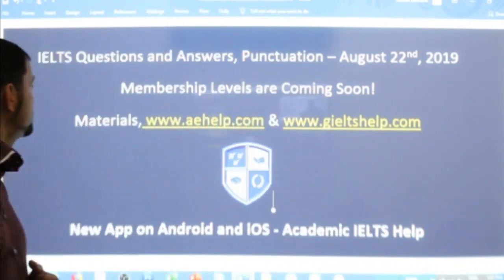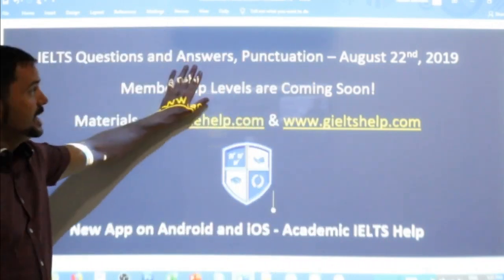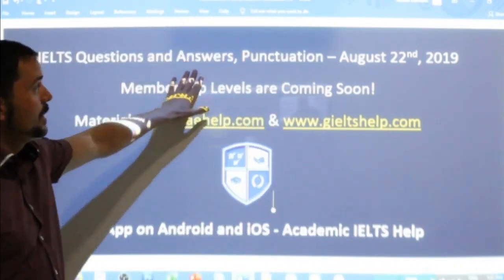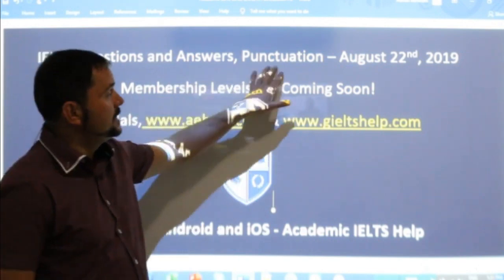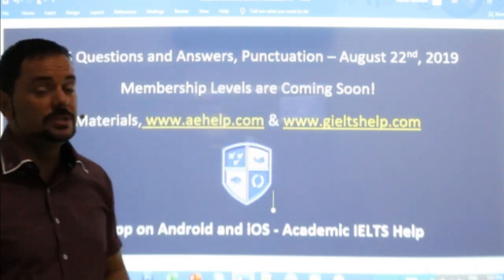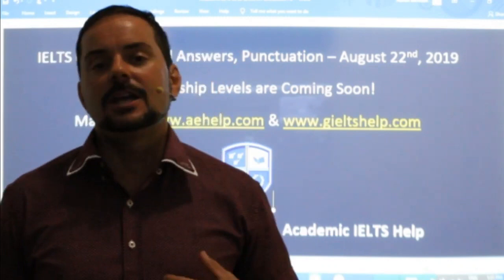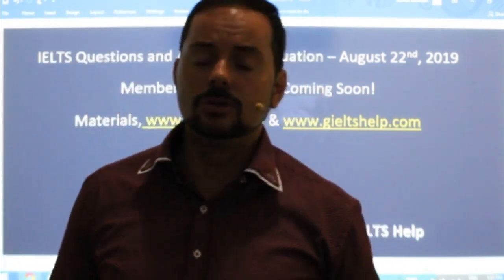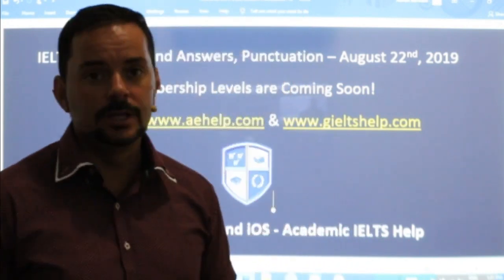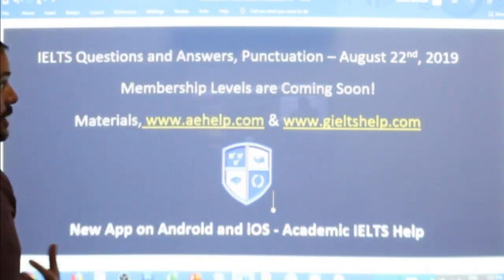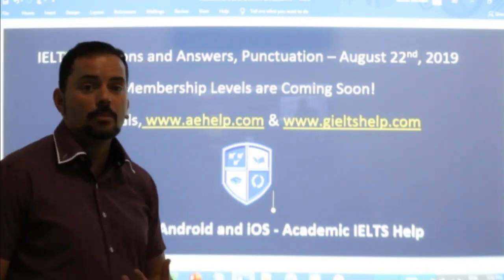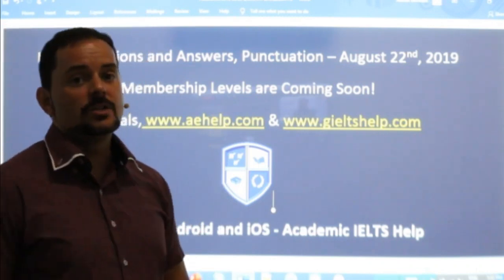In this class, we're looking at questions and answers about the writing section, focusing especially on using correct punctuation in writing task one and two. Punctuation means period, comma, colon, semicolon — all of those little symbols. How do you use them appropriately so that you're getting marks and not losing marks?